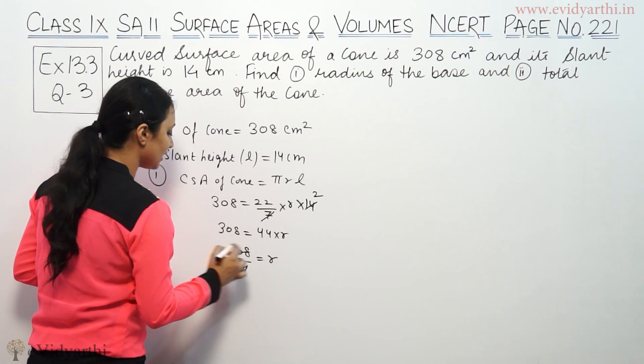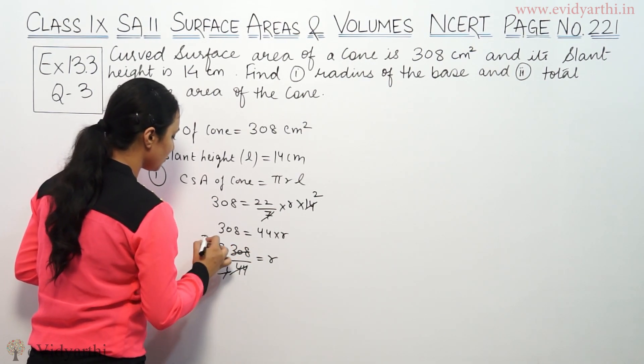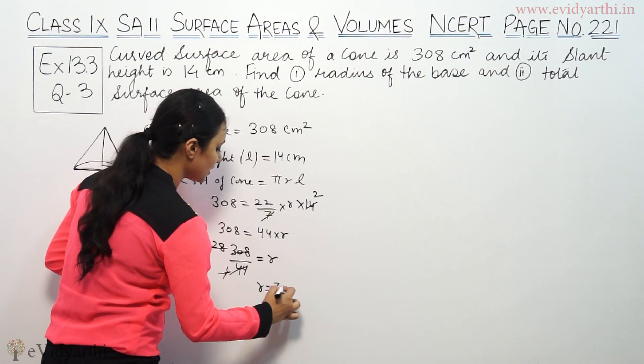So, 308/44 is equal to R. 11 × 2, 11 × 2, 11 × 2, × 7. So, R is equal to 7 cm.